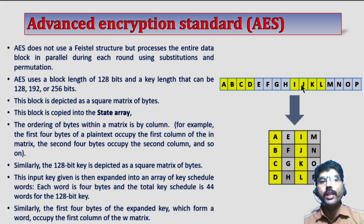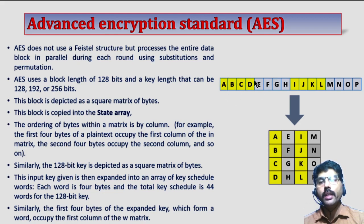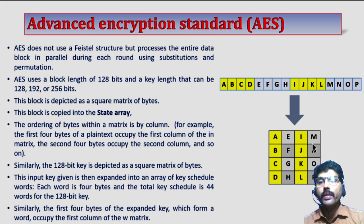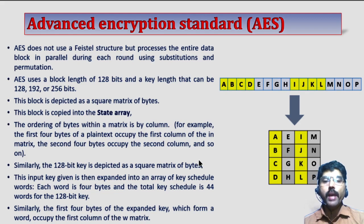If we consider the plain text of 128 bits, the first 4 bytes form the first column of the matrix, the next 4 bytes form the next column, and so on — that is how it is stored in the state array. Similarly, we have 128 bits or 16 bytes for a key. The key is also depicted as a square matrix of bytes, and we treat our key in a similar way.